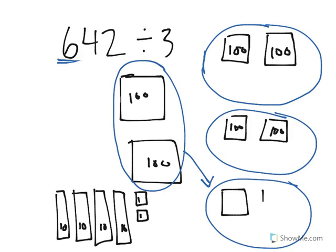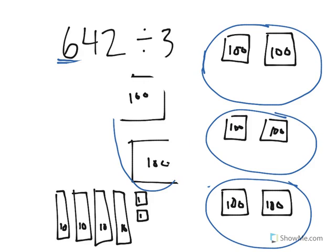And lastly, we're going to take the last group of two and break them up and place them in this bottom group. Now what's important to note is that all three groups have the same number of hundreds, which means we are able to evenly divide the hundreds into three groups.